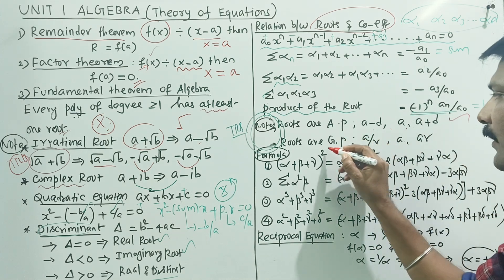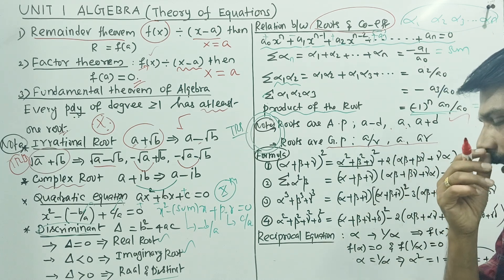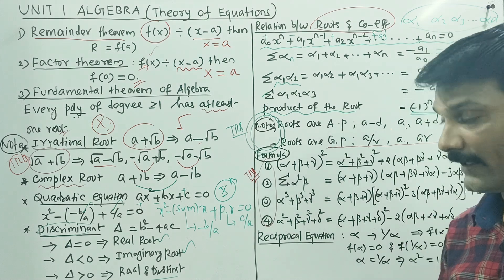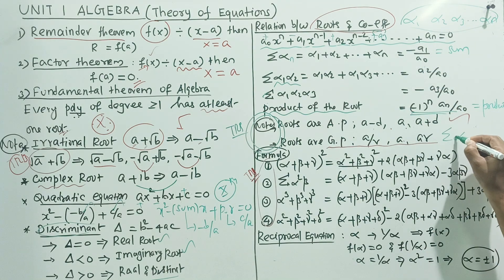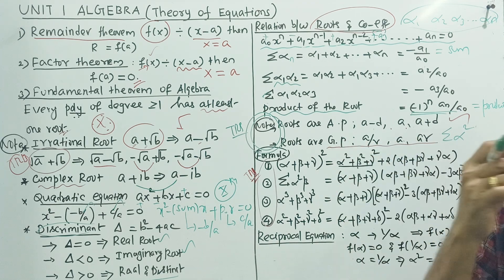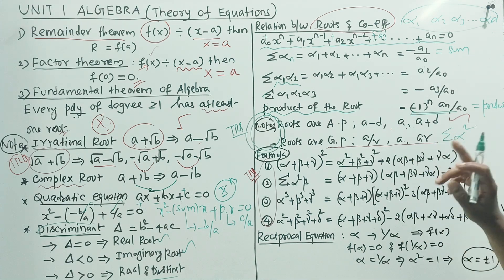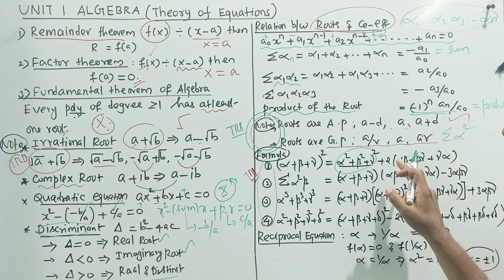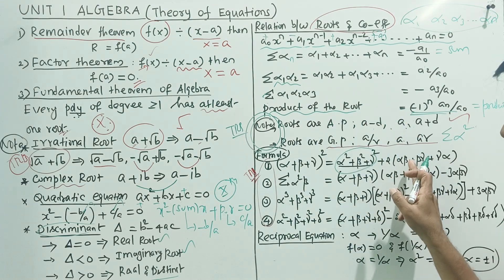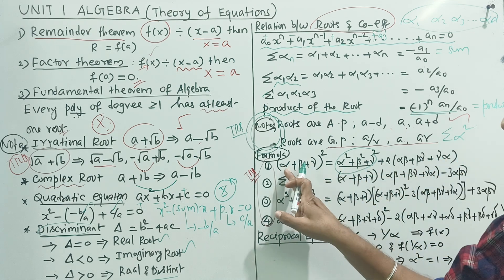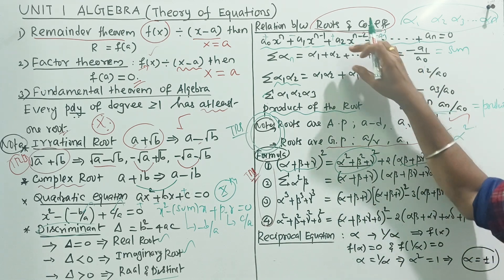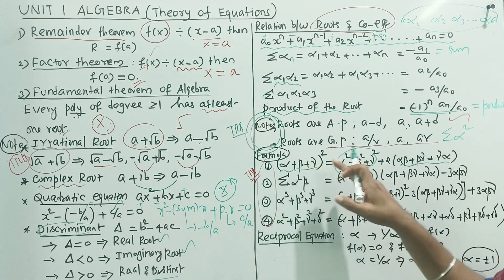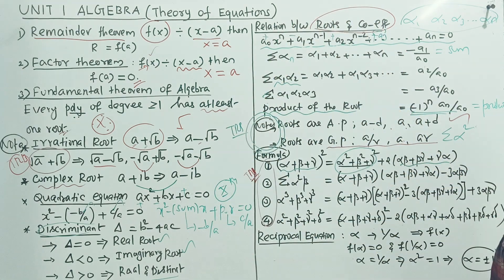Arithmetic progression is called one formula; geometric progression is called another formula. We will find the summation of α squared. The sum of α squared — that is α, beta, gamma — equals (α plus beta plus gamma)² minus 2 times (αβ plus βγ plus γδ). This uses algebraic identity; it is easier to identify using the formula.